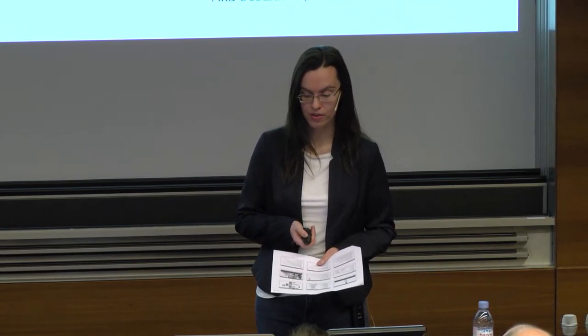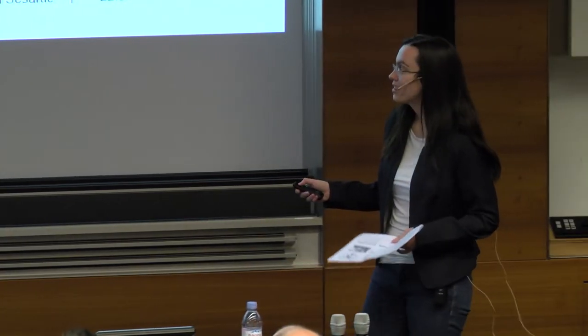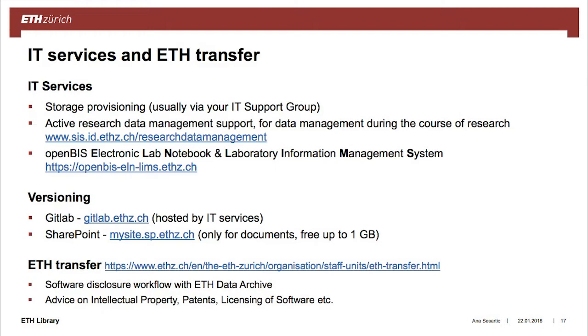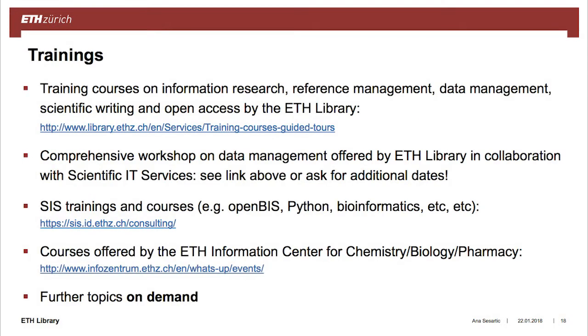GitLab and SharePoint are available — contact your IT providers. If you need to patent research findings or put licenses on software you create, the ETH Transfer Office can help with those legal questions. Trainings are offered by the ETH Library on topics including open access, data management, and reference management. Scientific IT Services offers training on topics like the OpenBIS ELN, Python, and others — the full course listing is available at their link.